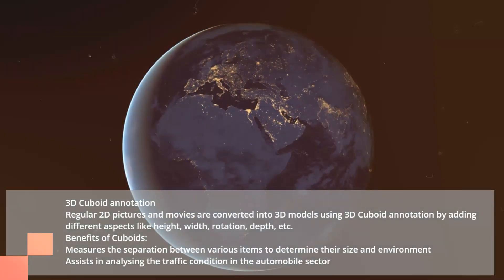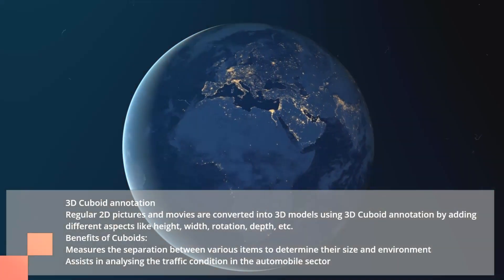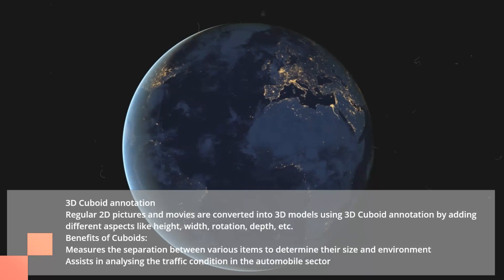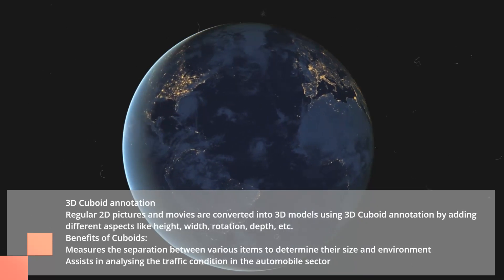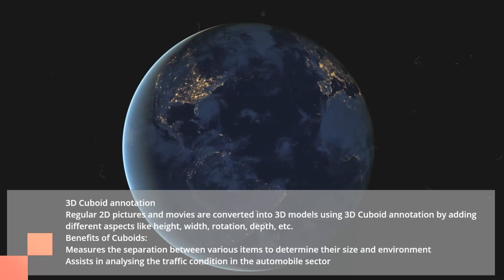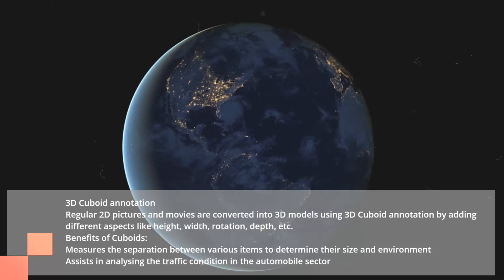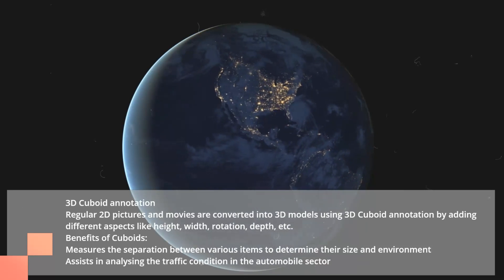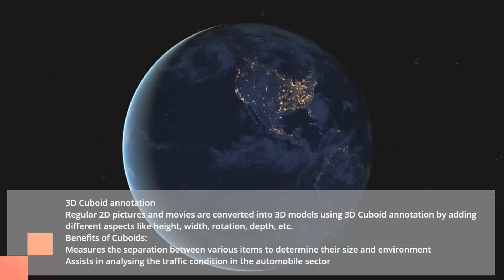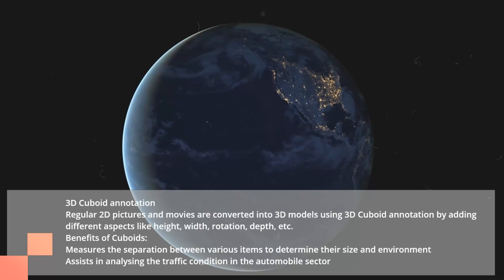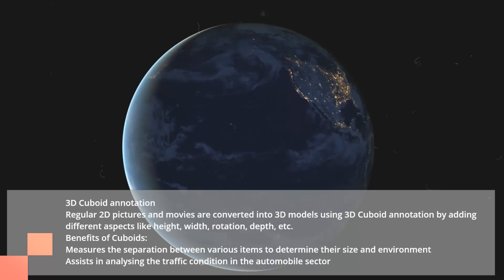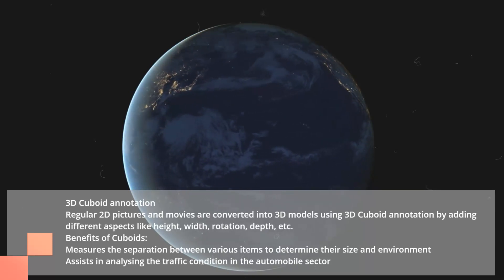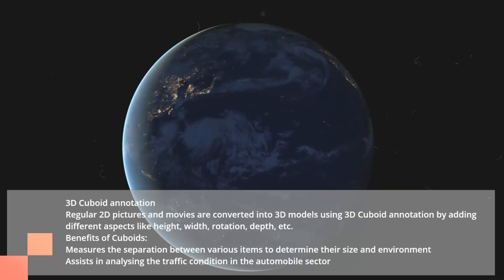3D cuboid annotation converts regular 2D pictures and movies into 3D models by adding different aspects like height, width, rotation, depth, etc. Benefits of cuboids include measuring the separation between various items to determine their size and environment, and assisting in analyzing traffic conditions in the automobile sector.